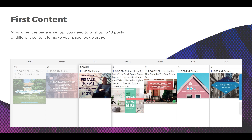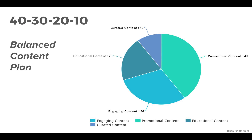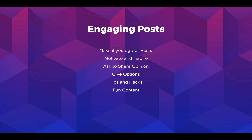When your page is set up, it's time to post. To publish your first posts, 10 posts will be more than enough. A well-balanced content plan for real estate agents: promotional content is the most important at 40% of the whole plan, 30% for engaging content, 20% for educational content, and only 10% for curated posts.